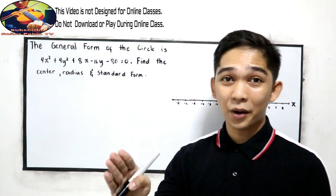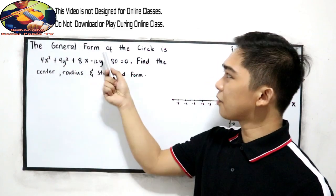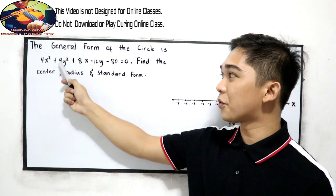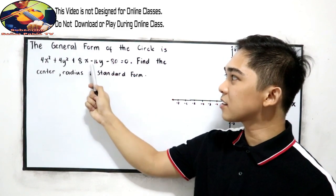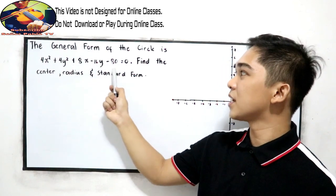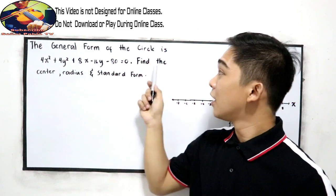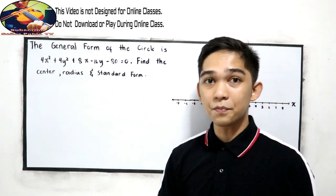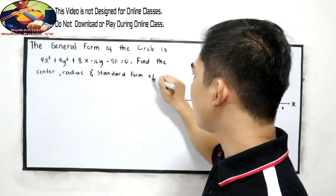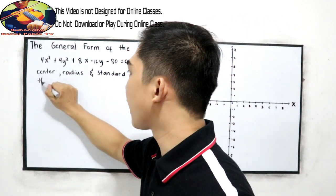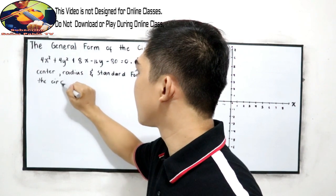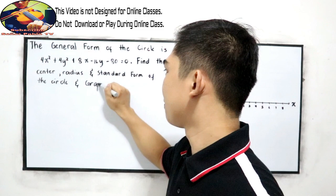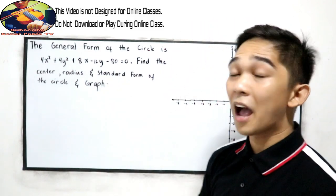Now, the problem is, the general form of the circle is 4x squared plus 4y squared plus 8x minus 16y minus 80 equals 0. Find the center, radius, and standard form of the circle and graph.